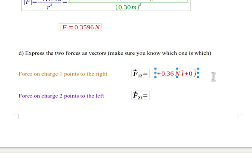So in terms of our standard vector notation, that means we have plus 0.36 Newtons i-hat and 0 j-hat for that force on charge 1, which points to the right.